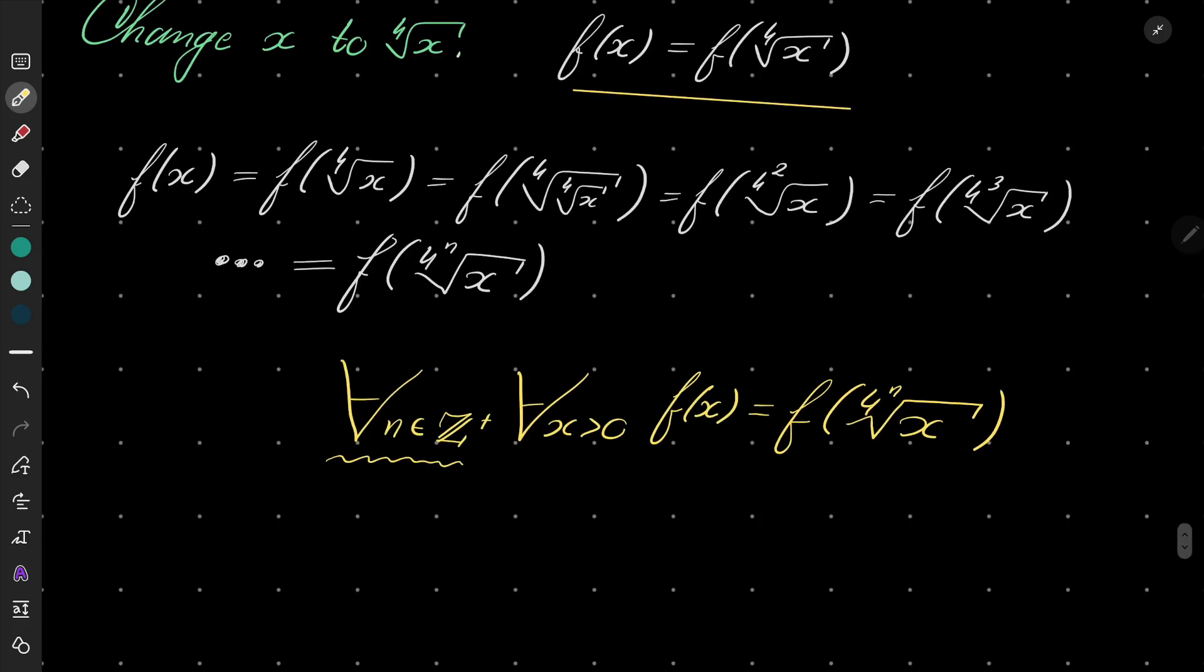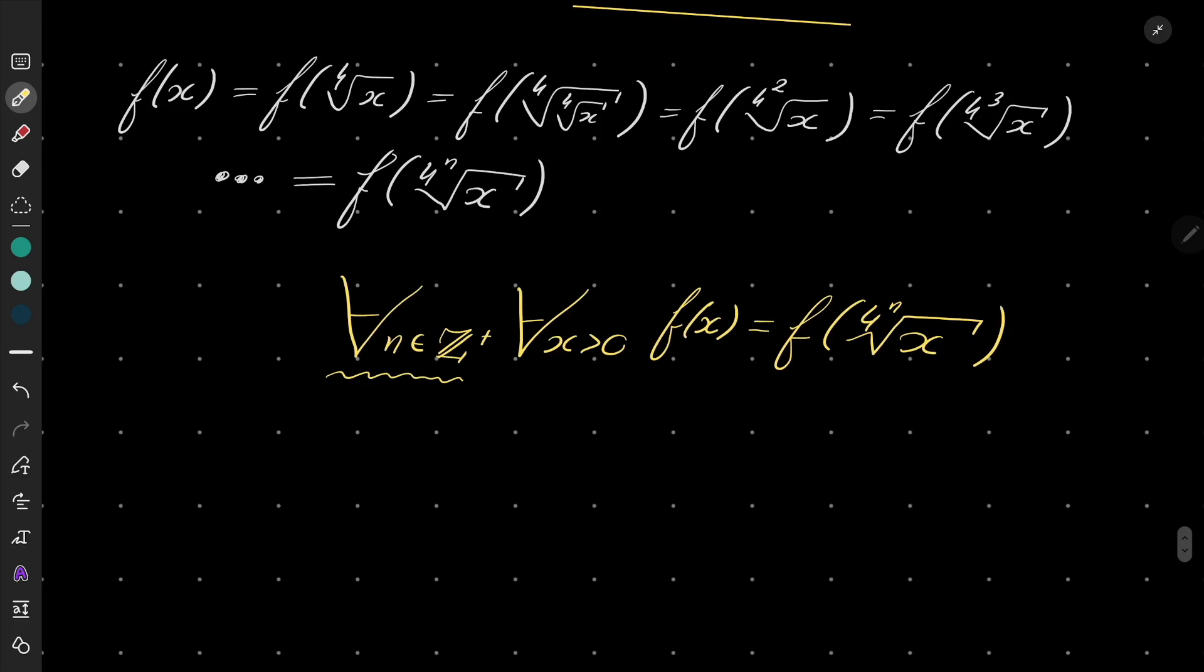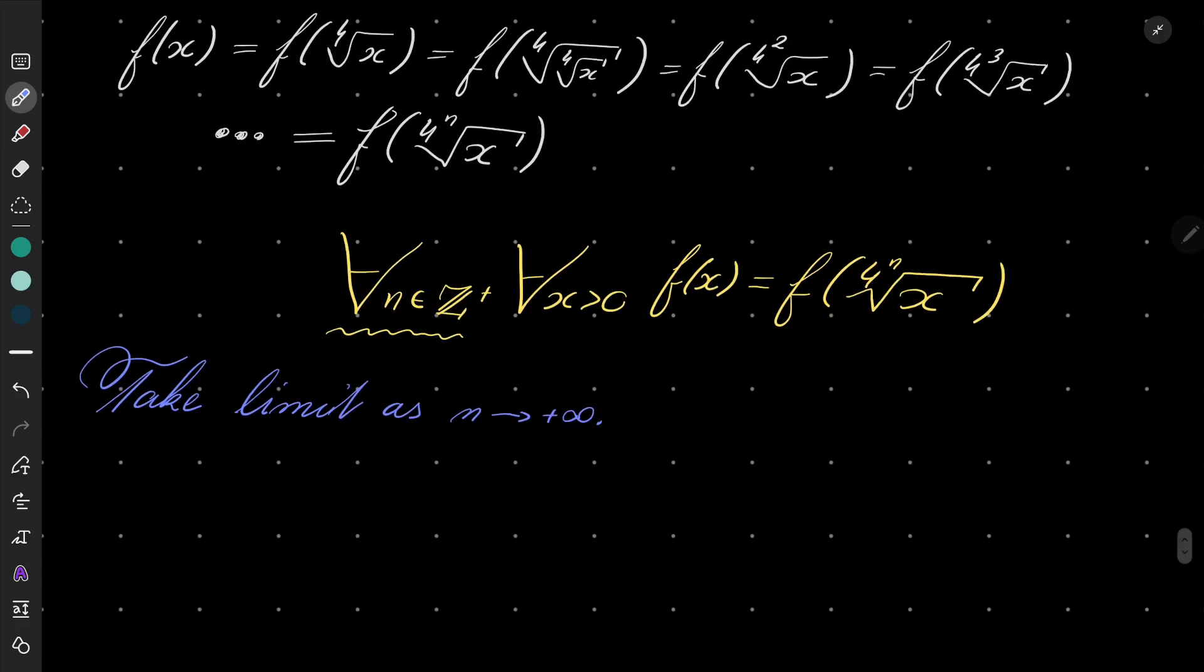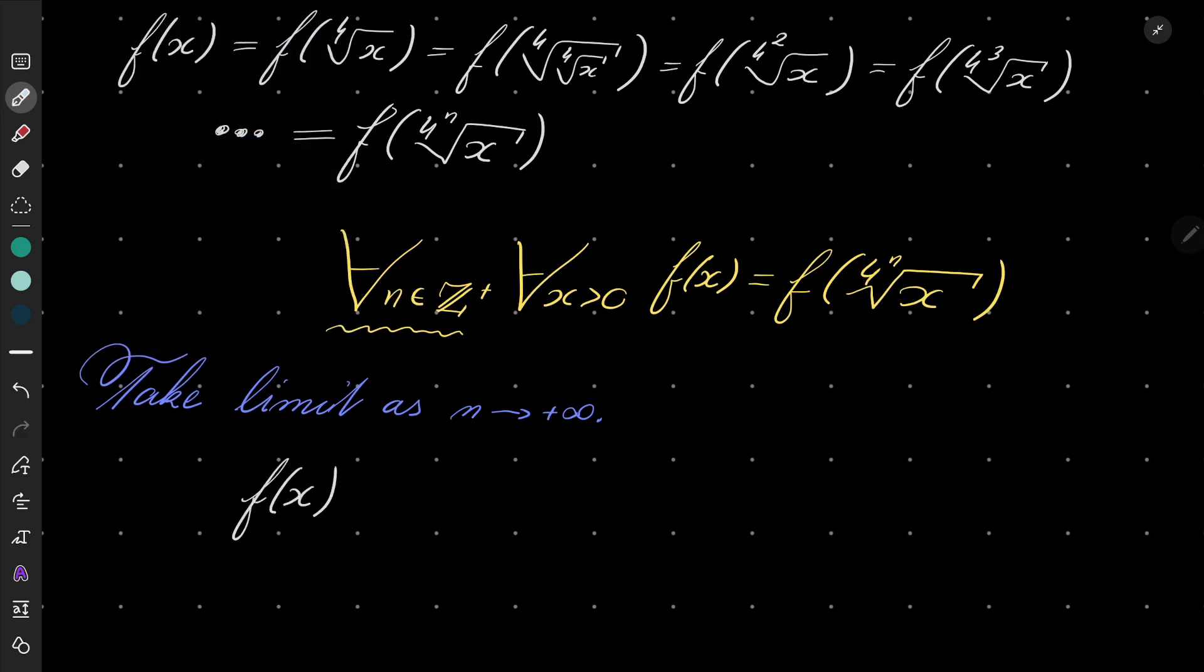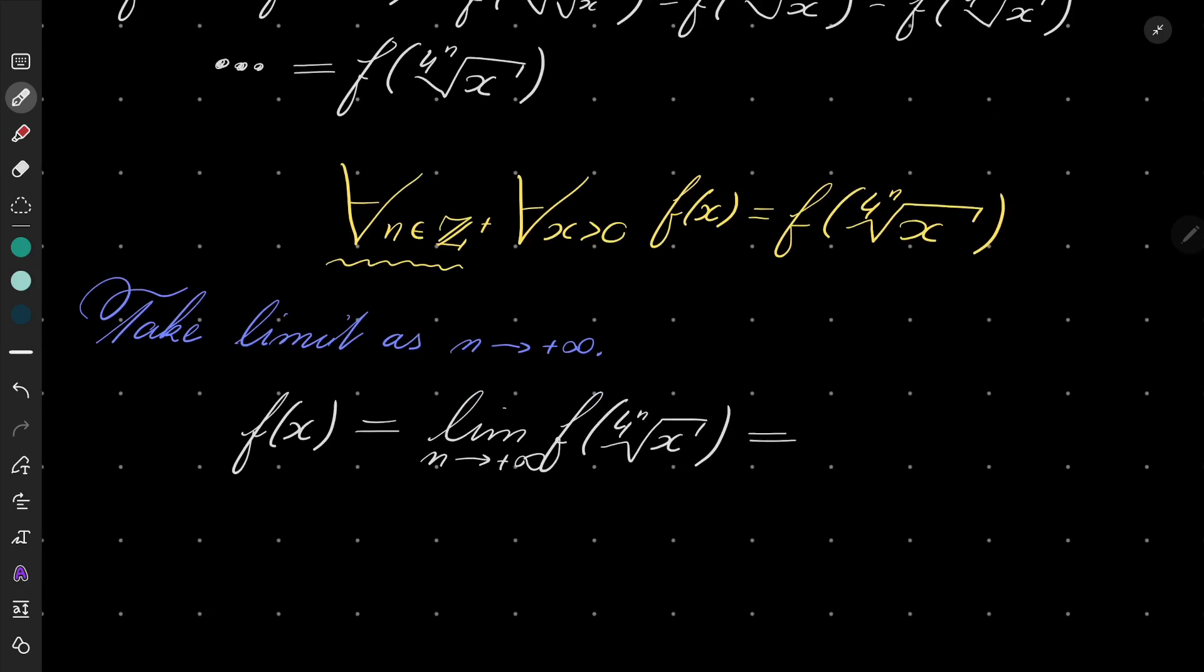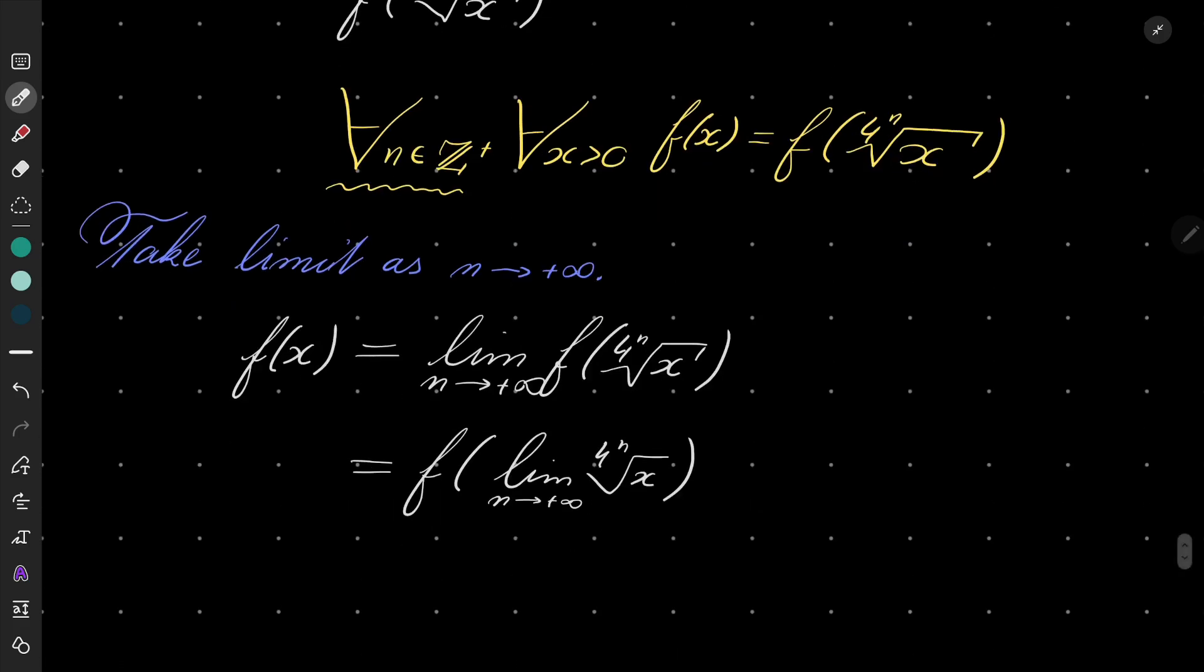And now, since this is true for every positive integer, we can take limit. So let's take limit as n goes to infinity. And what will happen? Well, on the left-hand side, we have just our function, no need to take any limit, there is no n. And on the right-hand side, we'll have the following. Okay, and now, by continuity, we can take limit inside our function. This step uses continuity.